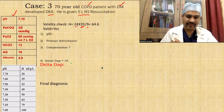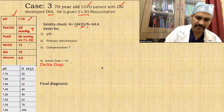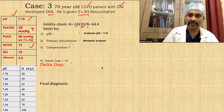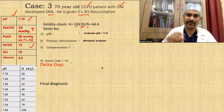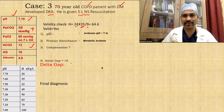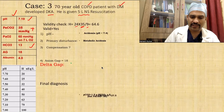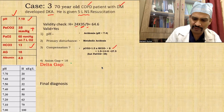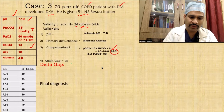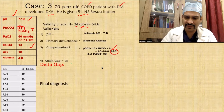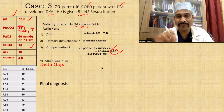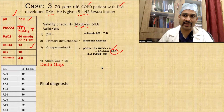For compensation in metabolic acidosis, we use the formula: 1.5 × bicarb + 8. This gives 27.5. But actual PCO2 is 35. Since the actual PCO2 is more than expected compensation of 27.5, there is additional respiratory acidosis along with metabolic acidosis.